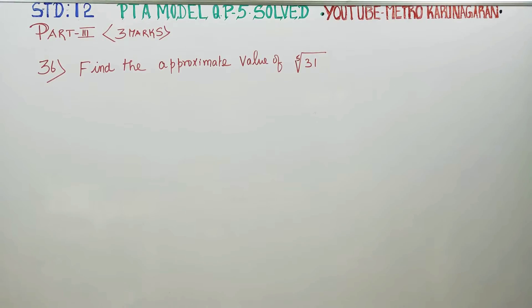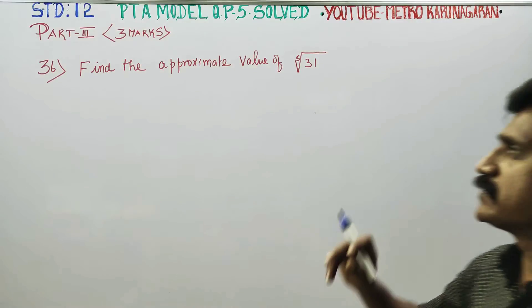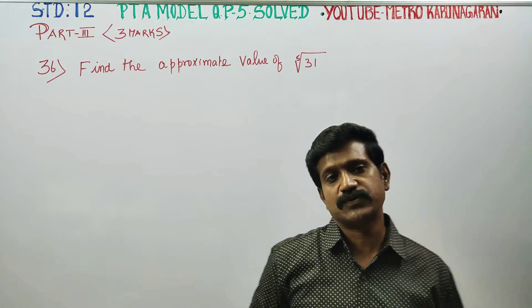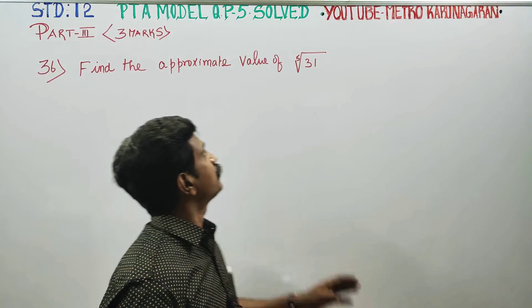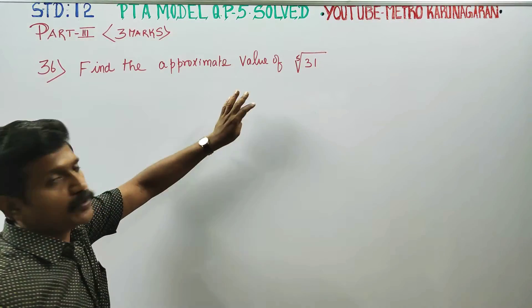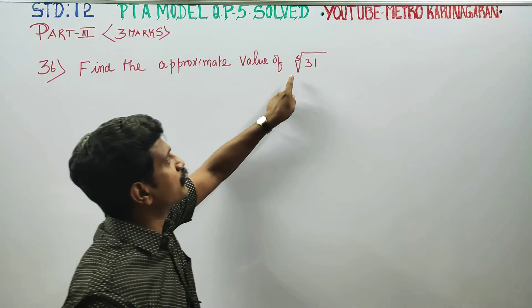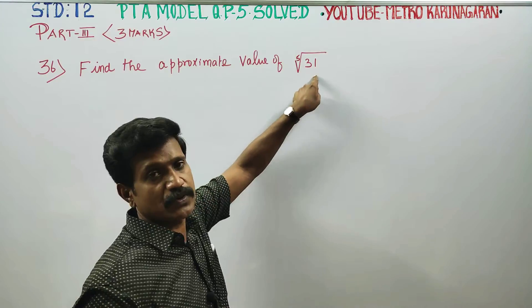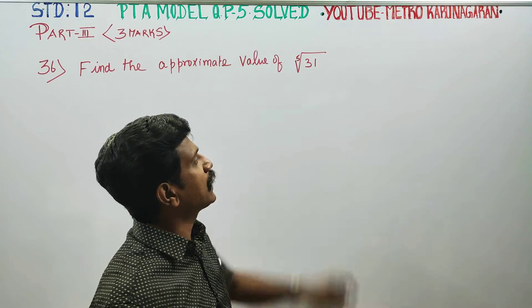Dear 12th standard students, I am Metro Karnagaran. In PTA model question paper 5, sum number 36, a 3-mark question, we are going to find the approximate value of the 5th root of 31.